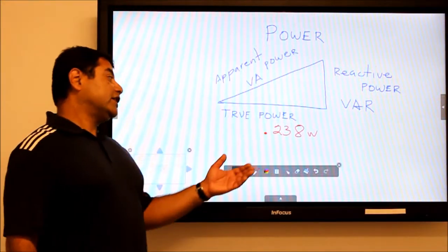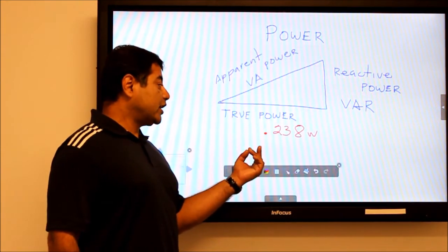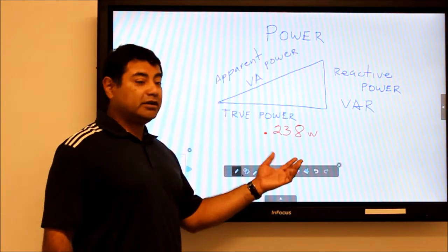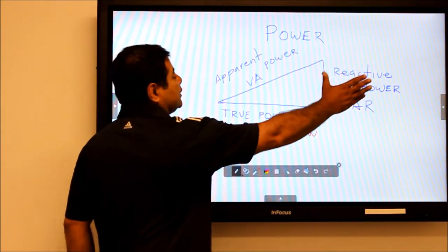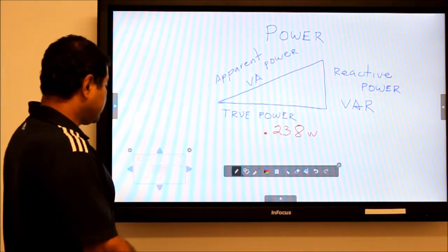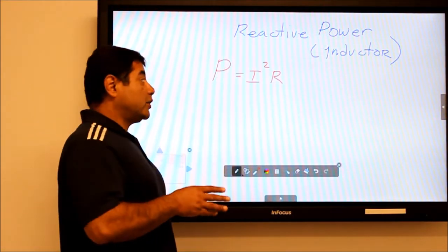As you can see, we have calculated the true power, which is the power that comes from the resistor, and we calculated it to be 0.238 watts. The next step is to calculate the reactive power, which comes from the inductor. That's very key for you to remember where these powers come from.